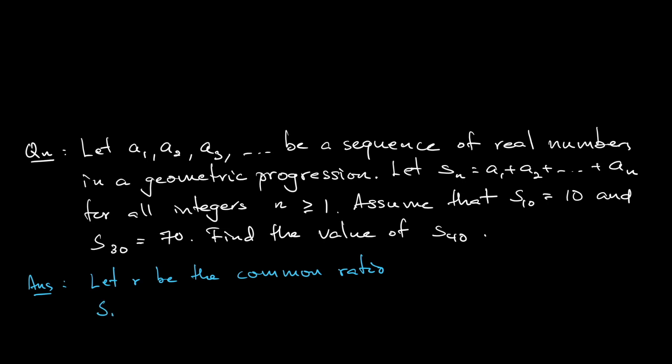So Sn equals a1 plus a2 plus all the way until an. If I take a1 as a factor, it's only 1 left. And a2 is in fact equal to a1 times r, so if you take a1 as a factor, r is left. Similarly, the next term is multiplied by r, so it's r squared, all the way until the last term which is an.